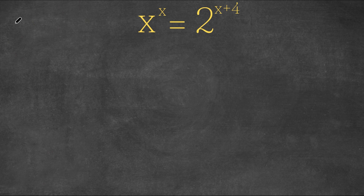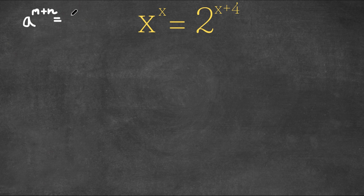Now, if we have something in the form a to the power of m plus n, then this can also be written as a to the power of m times a to the power of n.